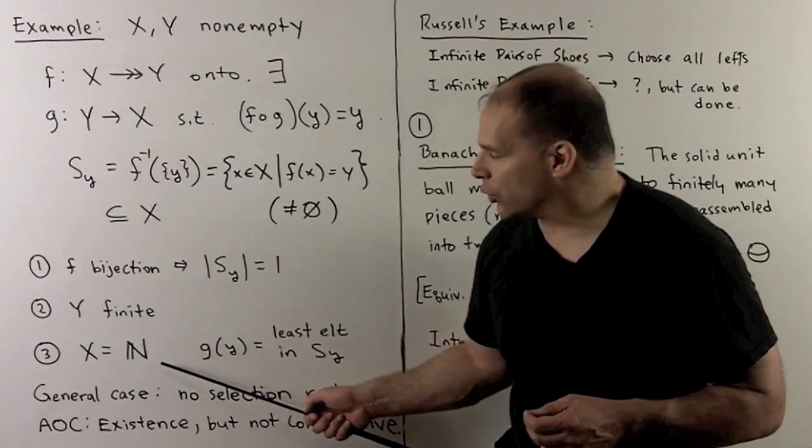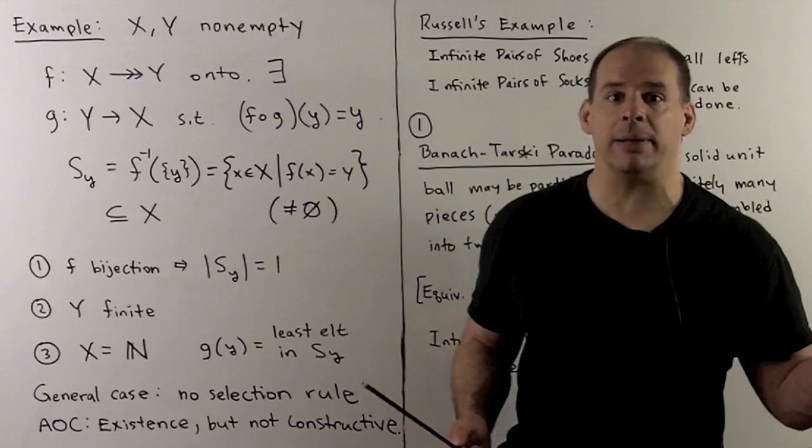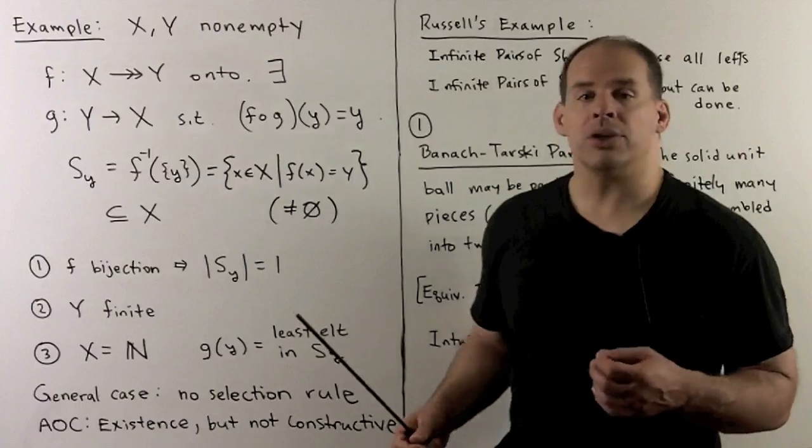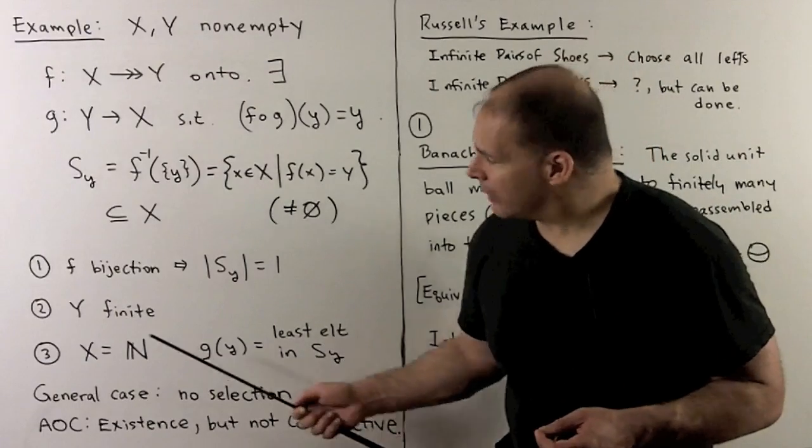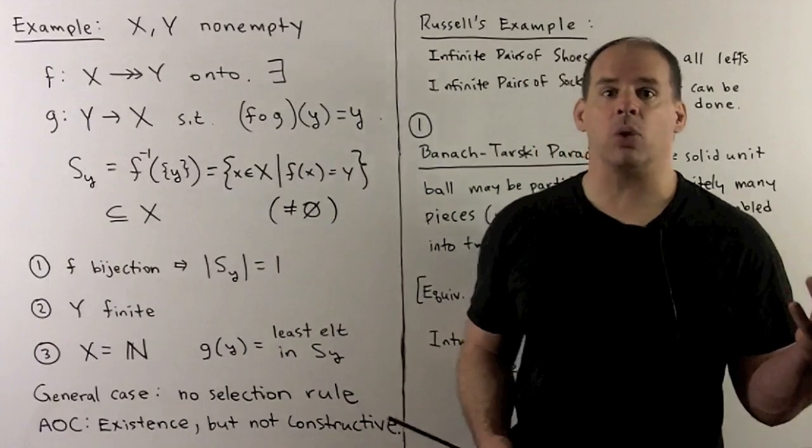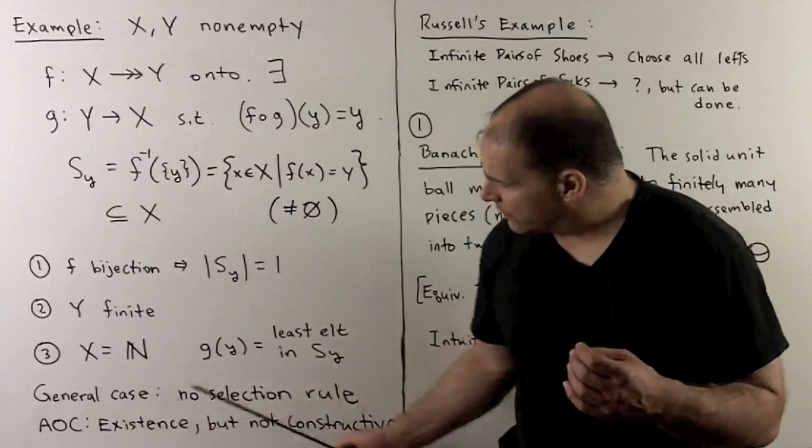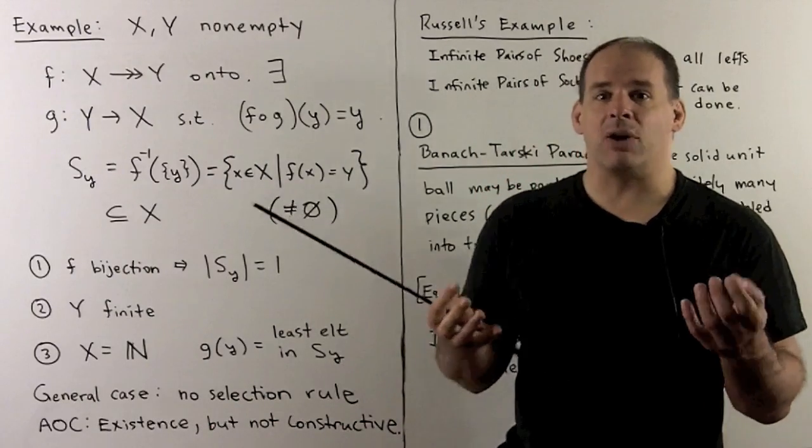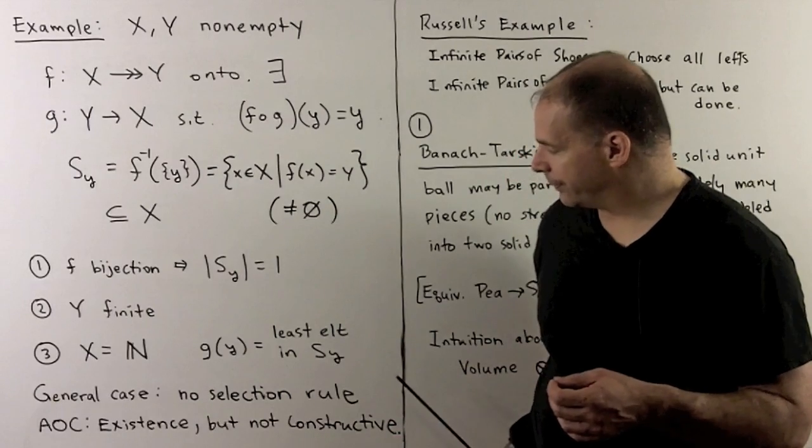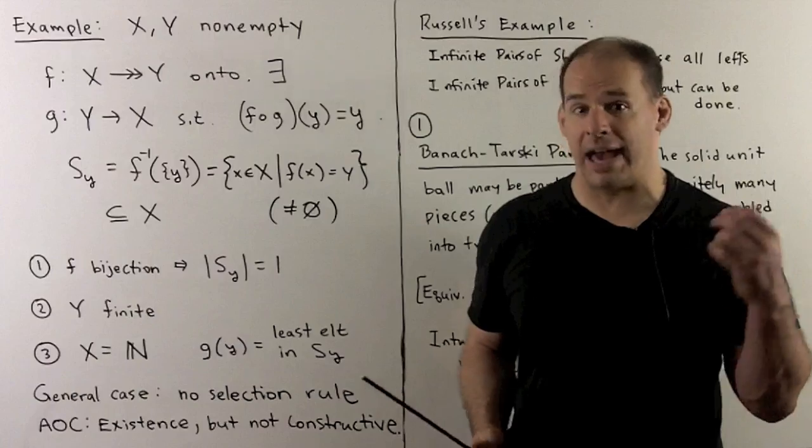For instance, if I let X equal the natural numbers, in the natural numbers every non-empty subset has a least element, and I can use that to get a choice function. In general, if I have Y infinite, meaning we're going to make an infinite number of choices, but no selection rule, we need to invoke the axiom of choice. That says there exists a choice function, but we might not have a recipe for how it works. We would say we have existence, but not constructive. That can be troublesome because that puts a black box in our work whenever we invoke the axiom of choice.